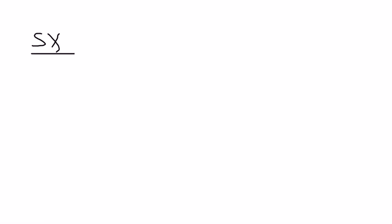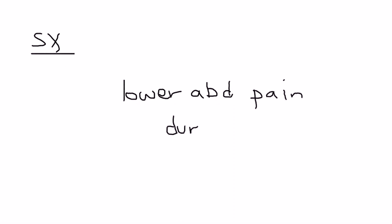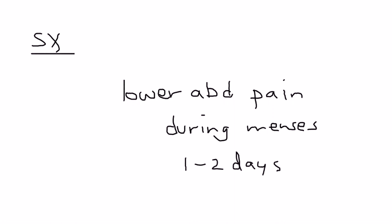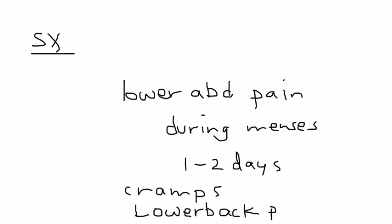What are some of the symptoms? The main symptom of dysmenorrhea is lower abdominal pain during menses. It usually begins before menses or the first day of menses and lasts about one to two days, with some variation. Menstrual cramps and lower back pain can also be associated, and then a lot of nonspecific symptoms as well — nausea and vomiting, headache, things like that.